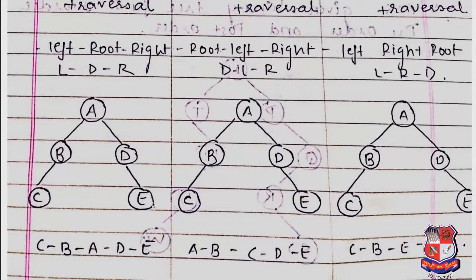Let us start with an example of how to traverse a tree using in-order, post-order, and pre-order. In this example, A is the root node, B and D are children of A, C is a child of B, and E is a child of D.